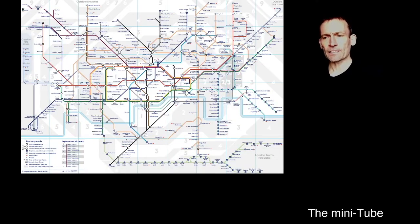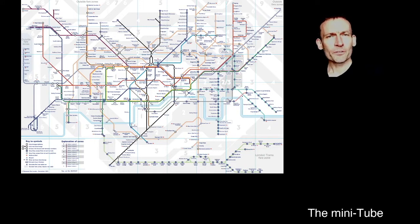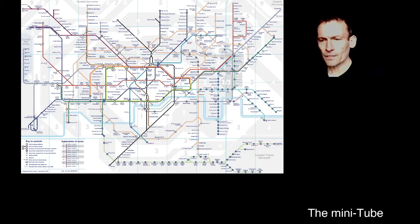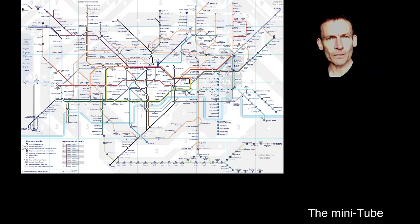Take a look at this. Do you recognise that? Well, if you're a student in London, you will. It is, of course, the famous map of the London tube network, the underground system.